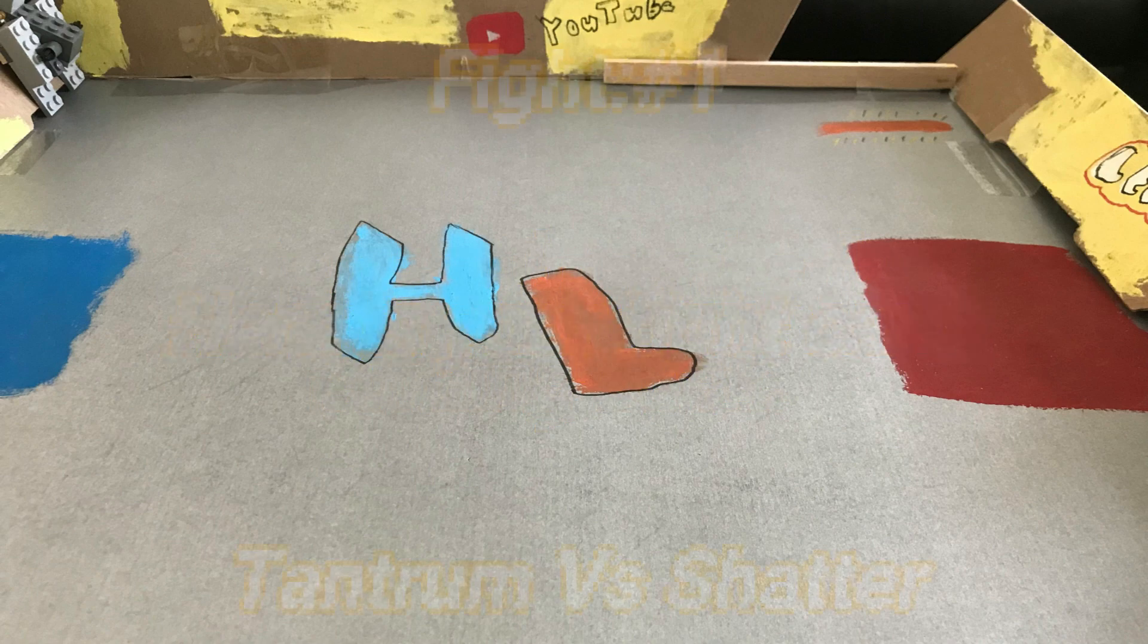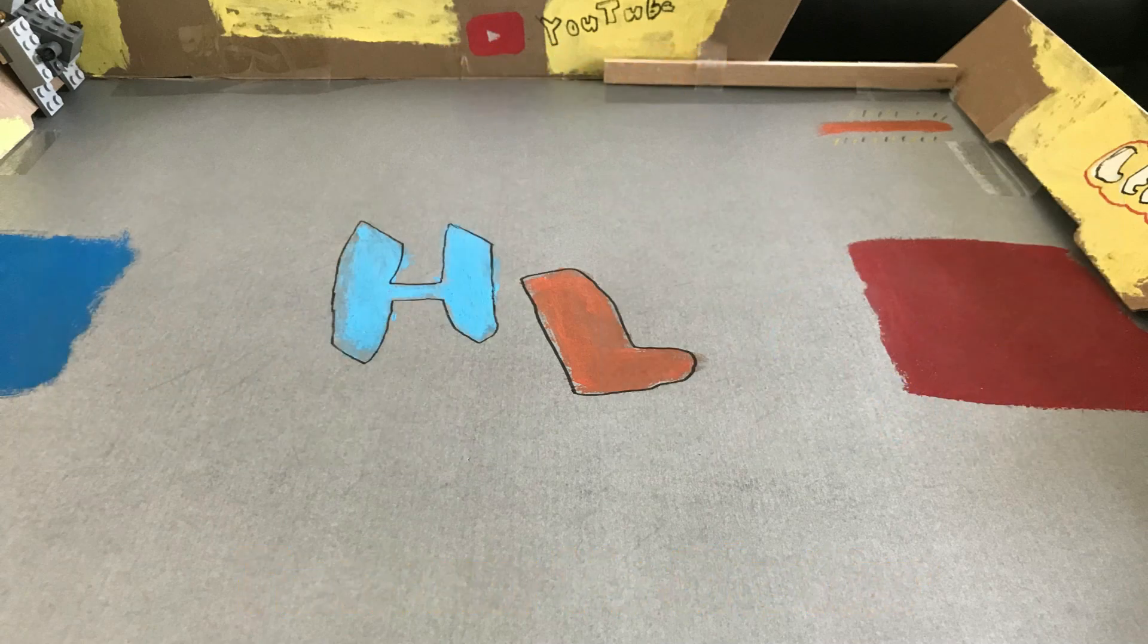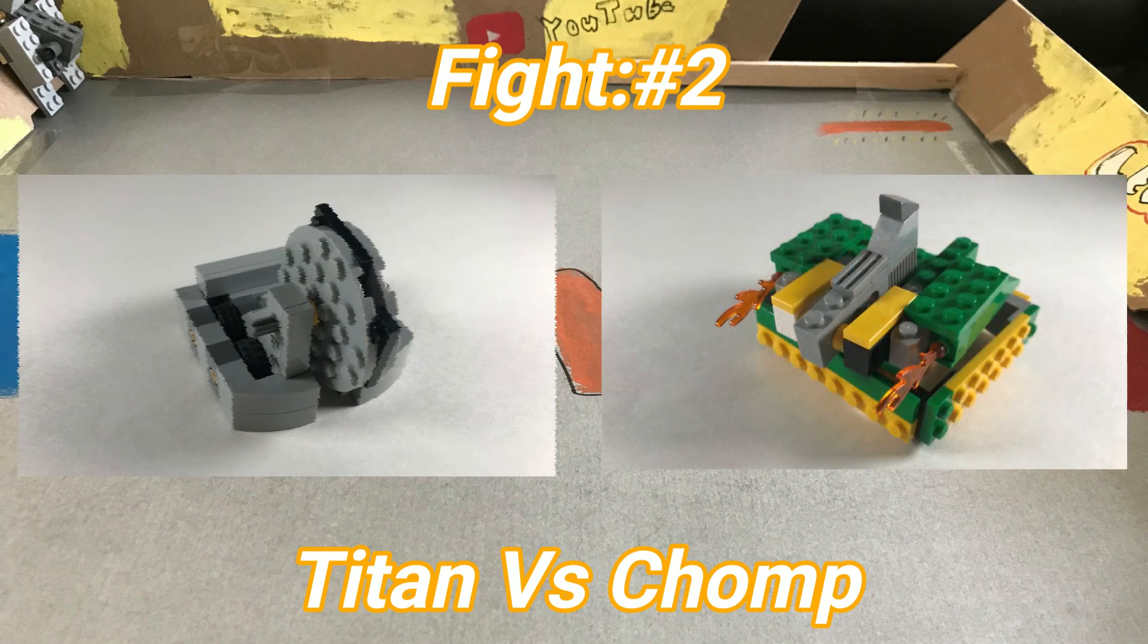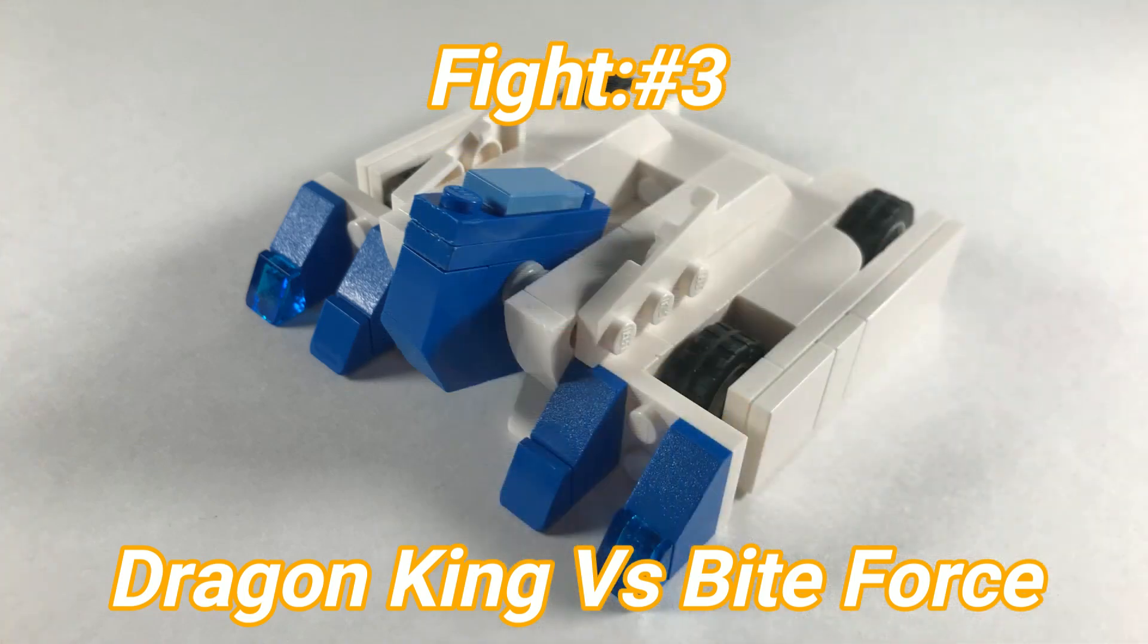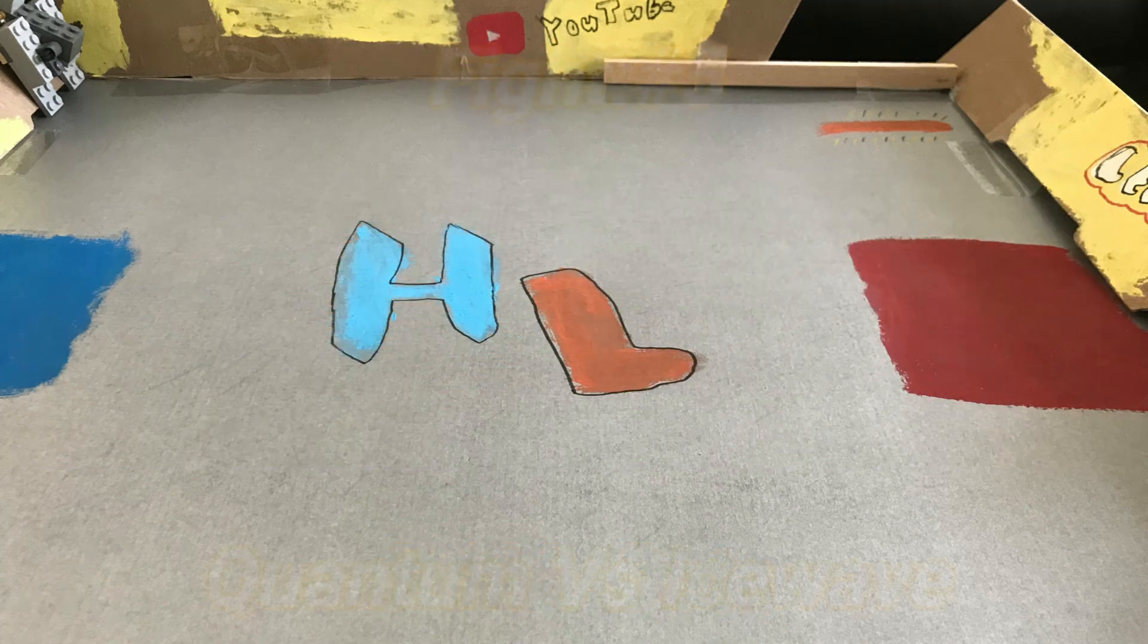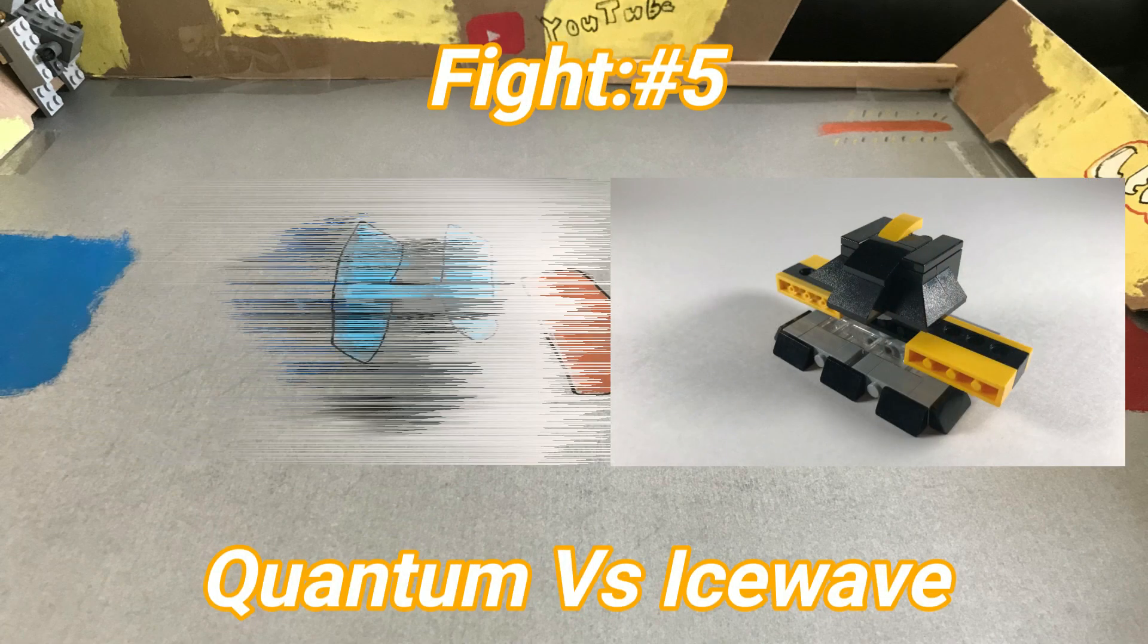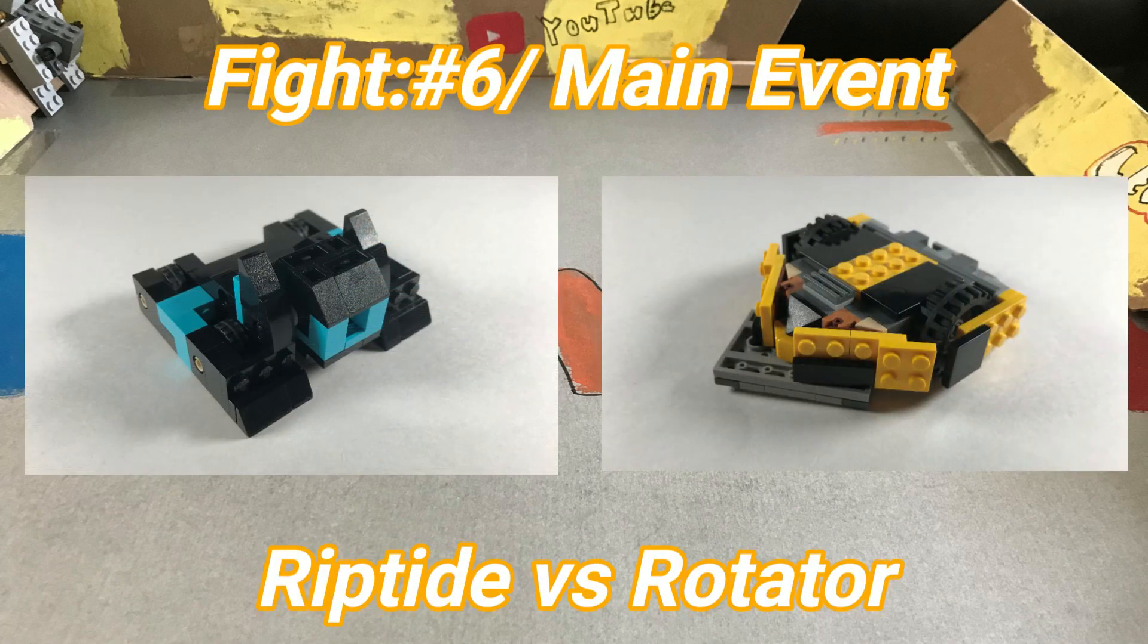We got Tantrum taking on Shatter as our first fight. We got Chop taking on Titan in our second match. We got Fight Force and Dragon King in our third match. We got the British Beta taking on P1. We got Quantum taking on Ice Wave in fight 5, and Rotator and Riptide in fight 6, which is our main event.